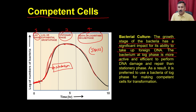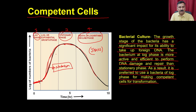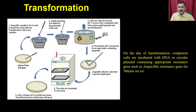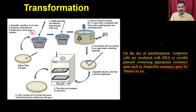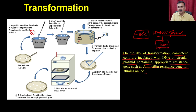Bacteria at log phase are more active and efficient to perform DNA damage and repair than stationary phase bacteria. Therefore, it is preferred to use log-phase bacteria for making competent cells for transformation. Once you grow the bacteria to log phase, collect those cells and use them for competent cell preparation. On the day of transformation, competent cells are thawed and incubated with the DNA — either linear DNA or circular plasmid with appropriate resistance genes — on ice for 30 minutes.